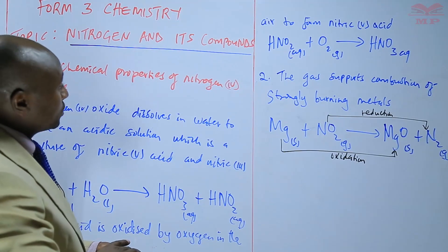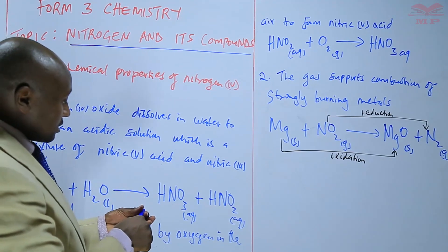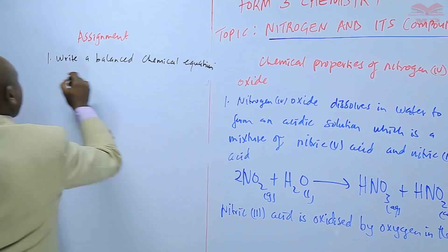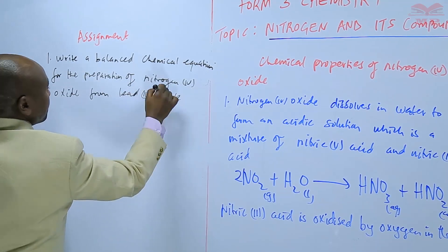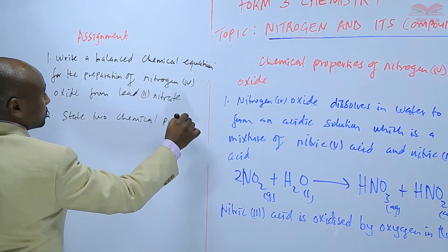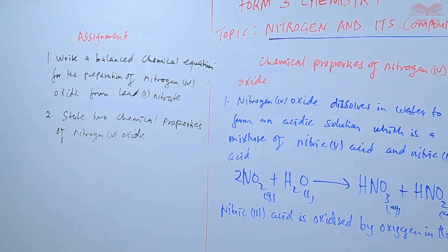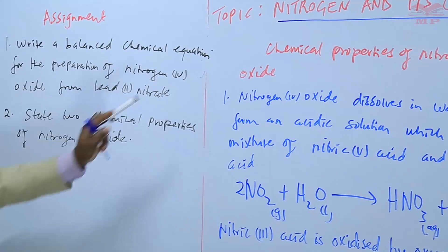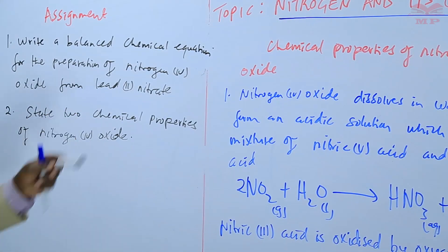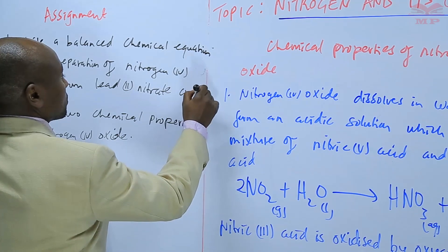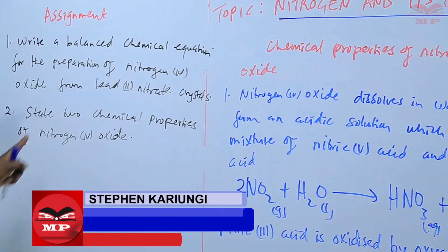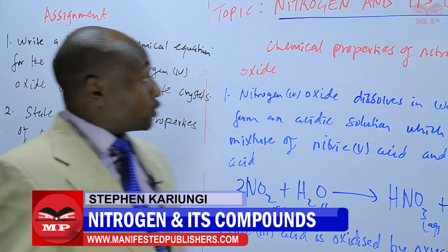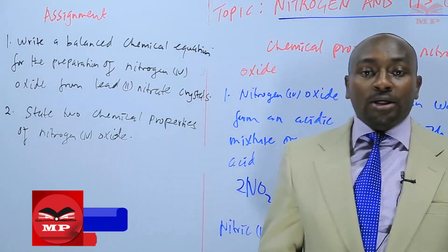We are going to stop there and have an assignment. Question one: write a balanced chemical equation for the preparation of nitrogen dioxide from lead 2 nitrate crystals. Question two: state 2 chemical properties of nitrogen dioxide. We are going to stop there and continue next time. Goodbye.